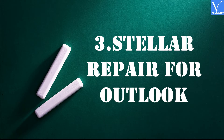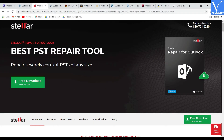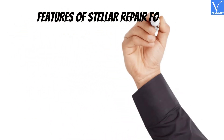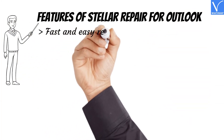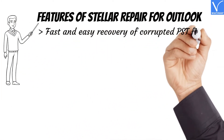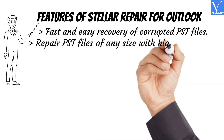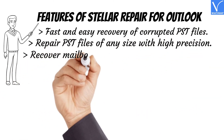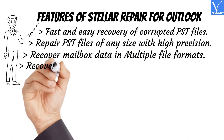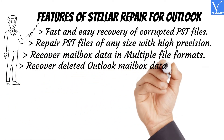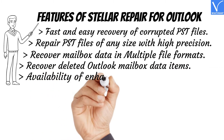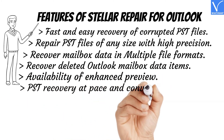Number 3: Stellar Repair for Outlook. Stellar Repair for Outlook will extract all information from the corrupted PST file accurately. It will scan any size of PST file to extract the information stored in it. Features: Fast and easy recovery of corrupted PST files. Repair PST files of any size with high precision. Recover mailbox data in multiple file formats. Recover deleted Outlook mailbox data items. Availability of enhanced preview and PST recovery at pace and convenience.